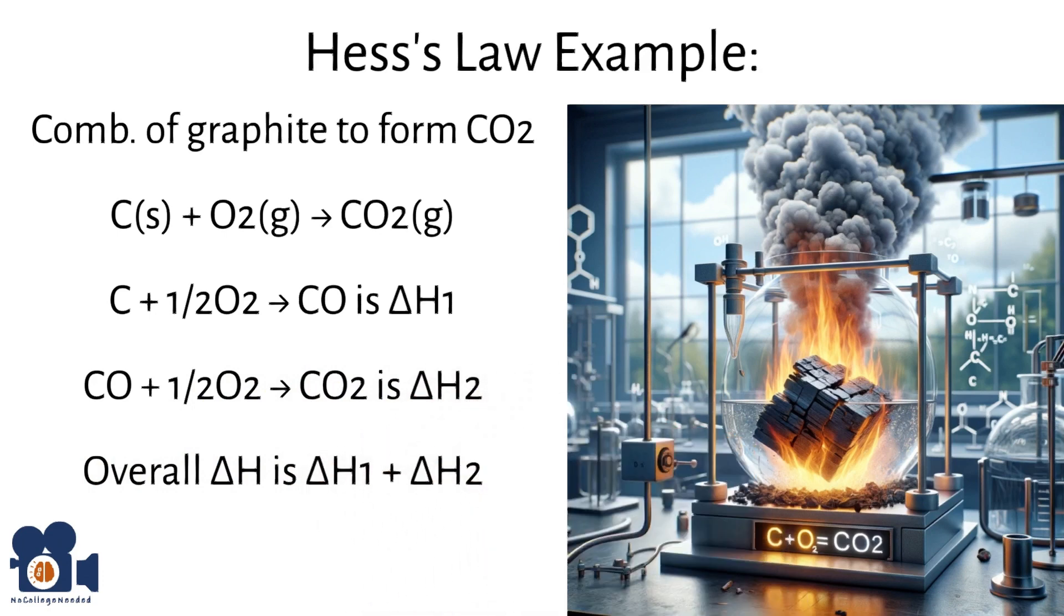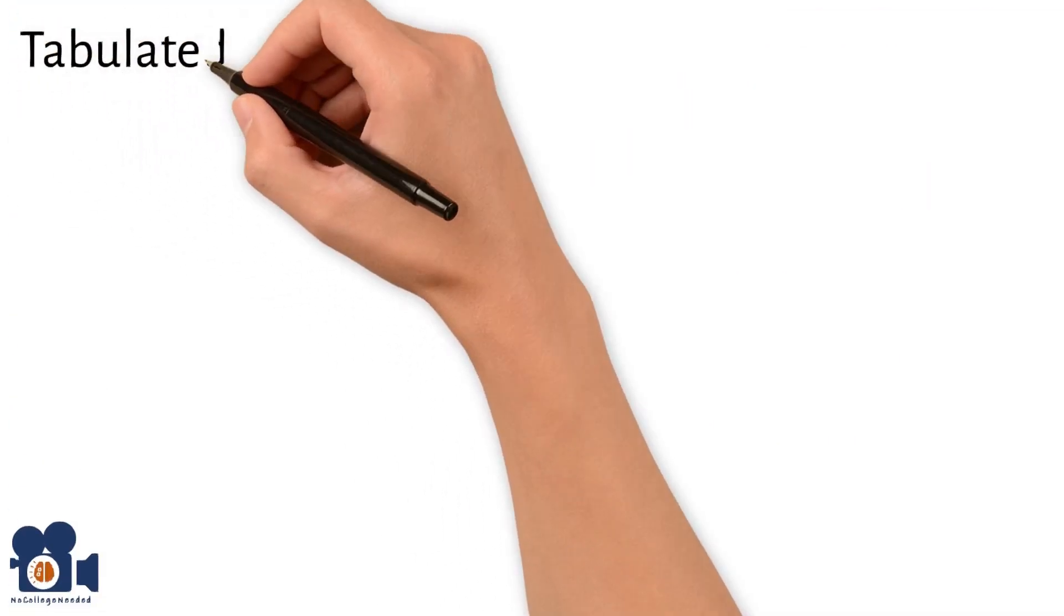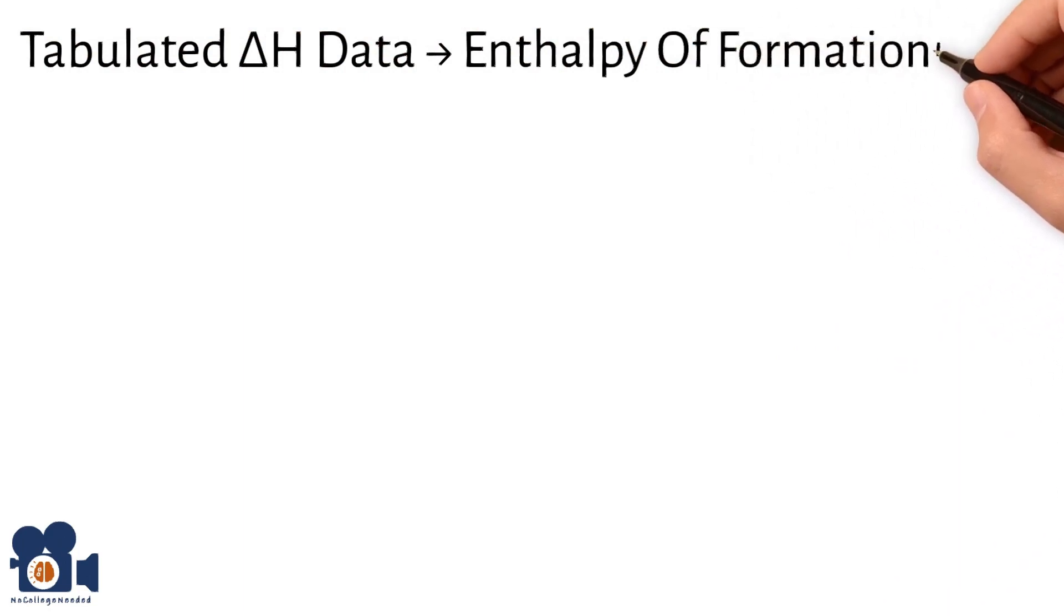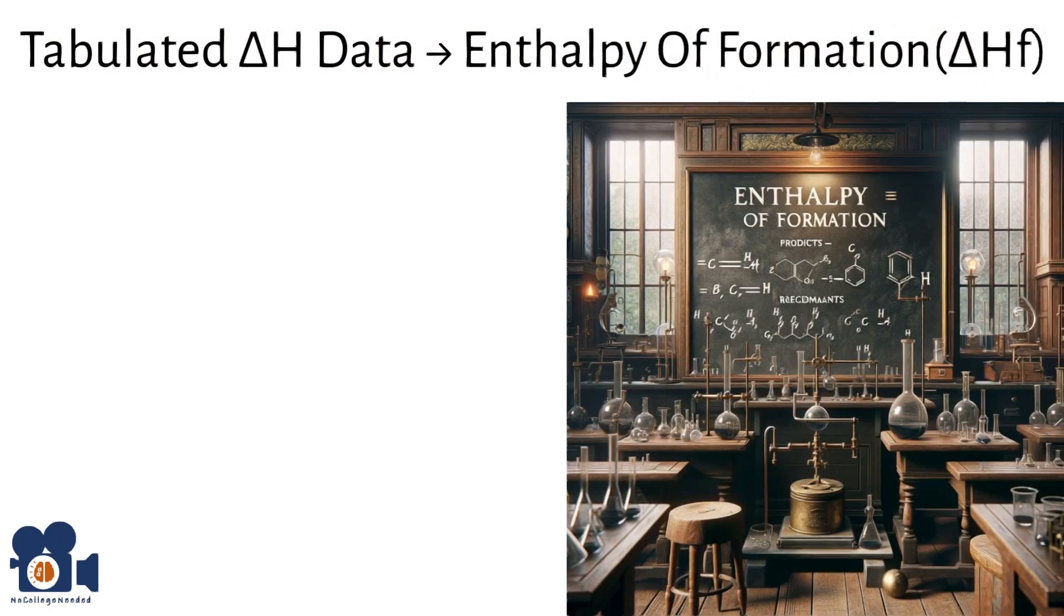This approach demonstrates Hess's law since it doesn't matter how CO2 was formed from carbon and oxygen. The total enthalpy change will be the same. The tabulated delta H values also lead to the idea of enthalpy of formation, delta Hf, often referred to as heat of formation, and when used in conjunction with Hess's law, this is a powerful tool for scientists.